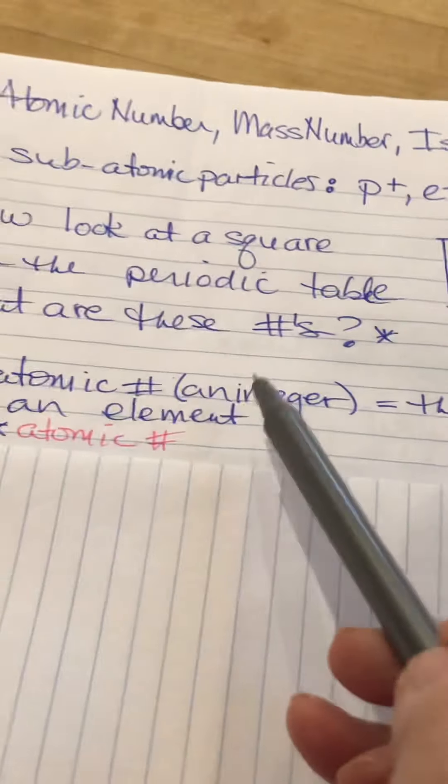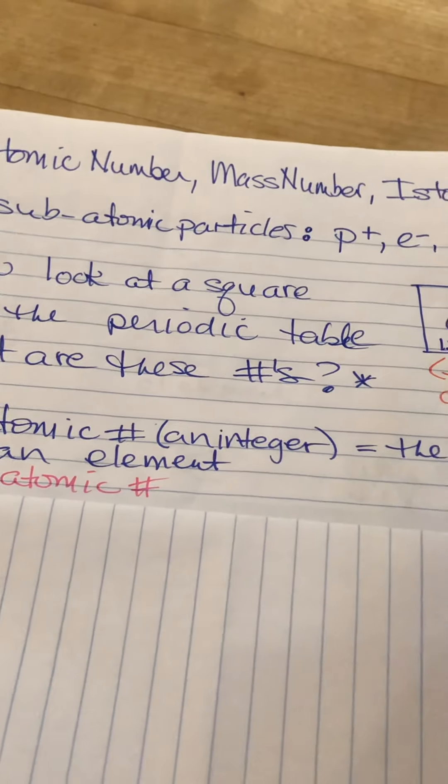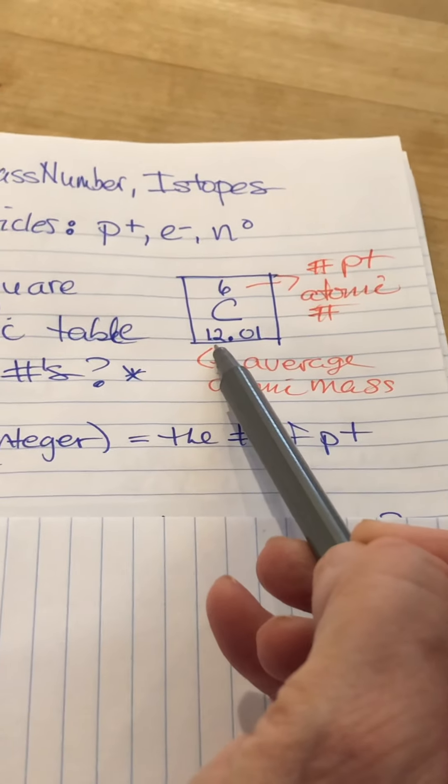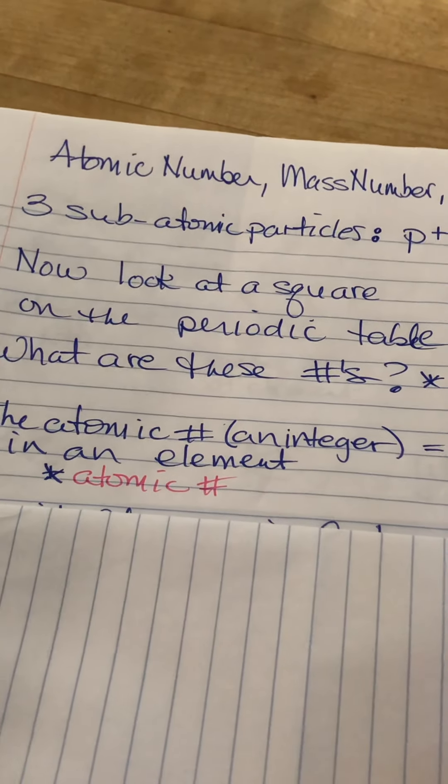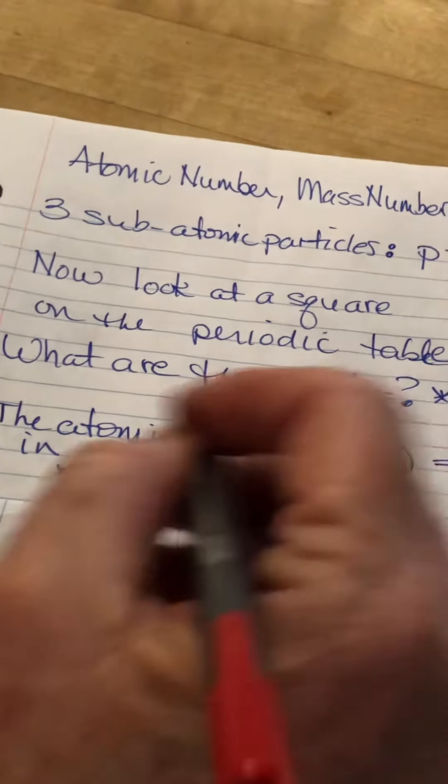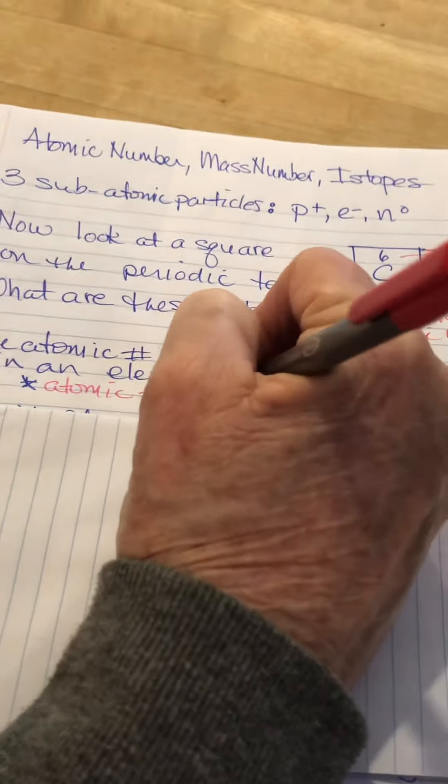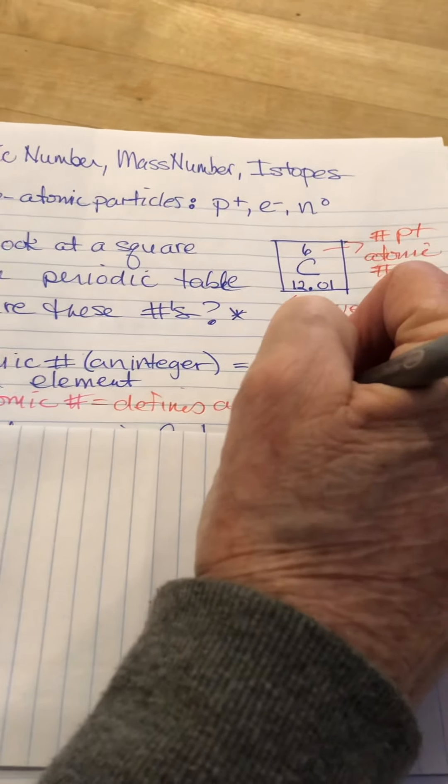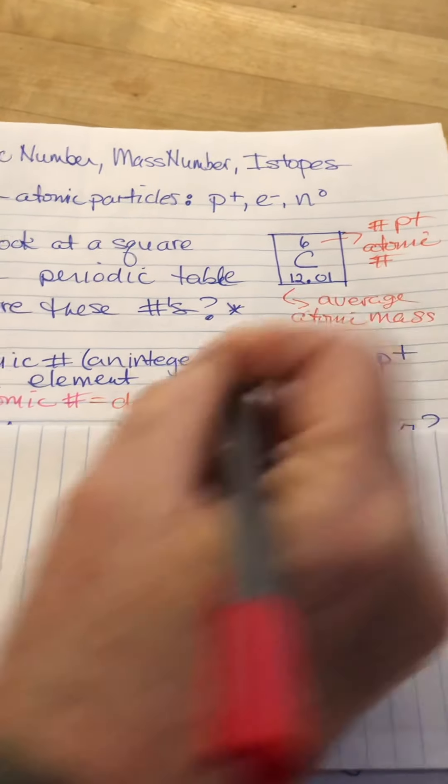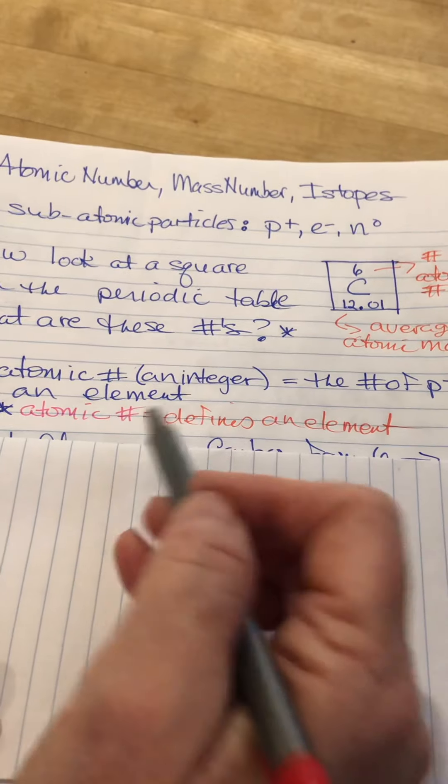The atomic number, which is always, always, always an integer (this is not the atomic number, people always get this messed up, it's the integer value), is the number of protons in an element. The atomic number is what defines an element. That's really important. The number of protons, or the atomic number, defines an element.